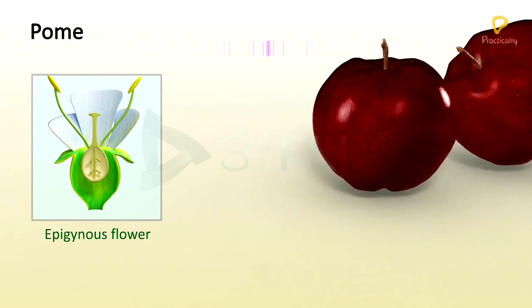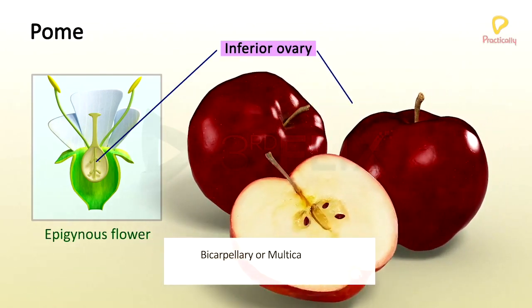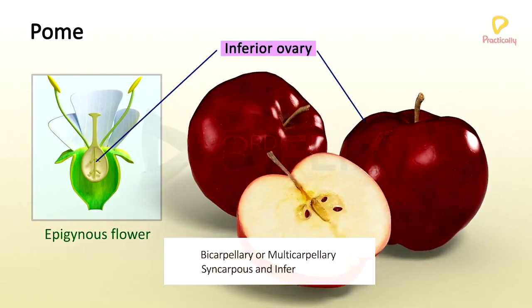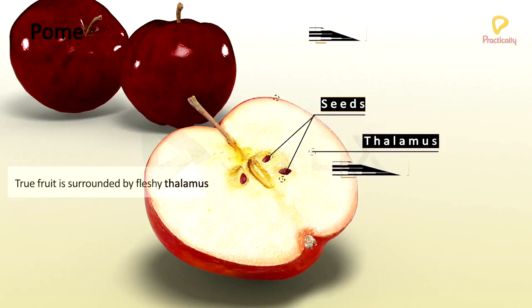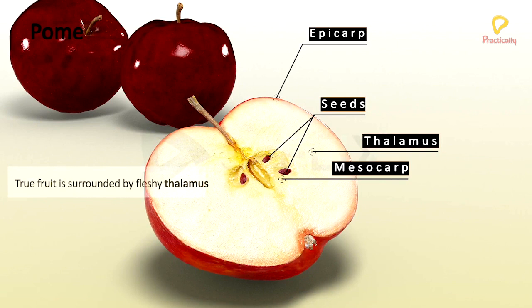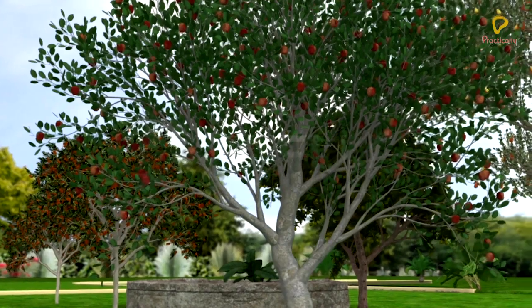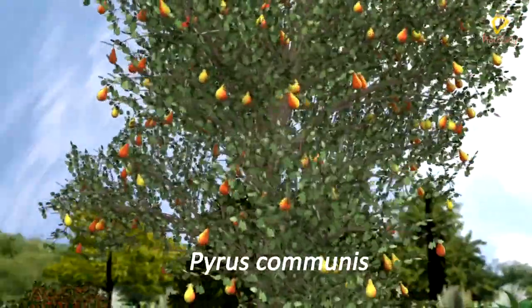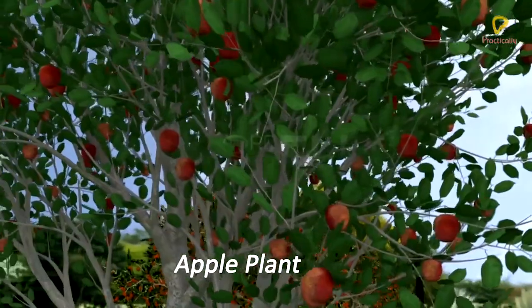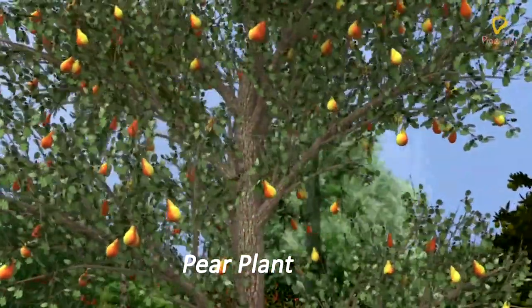Pome. Pome develops from bicarpellary or multicarpellary, syncarpous, inferior ovary, with axile placentation. Pome is a true fruit and is surrounded by fleshy thalamus. In Pome, the epicarp and mesocarp are fleshy and are fused with the fleshy thalamus, but the endocarp is cartilaginous. Pome is seen in Pyrus malus and Pyrus communis. Pyrus malus is the botanical name of apple, and Pyrus communis is the botanical name of pear.